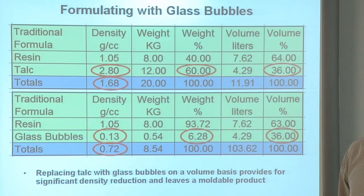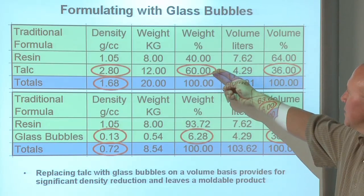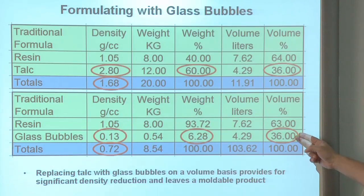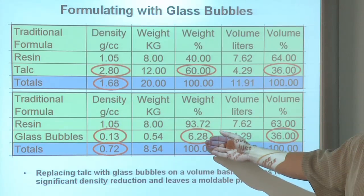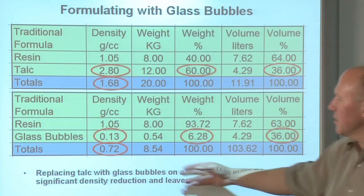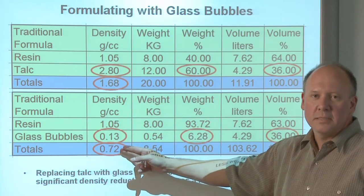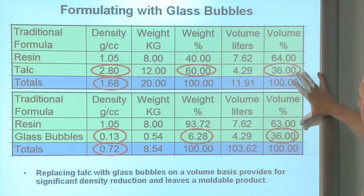What we should do is reformulate this system on a volume basis, where we've replaced the 60% by weight talc — or 36% by volume — with the same volume percent of glass bubbles: 36% by volume. That equates to only 6.28% by weight of glass bubble material. So it's a very economical use of filler, and you're cutting the density by more than half by supplanting the talc with glass bubbles at the same volume percent.